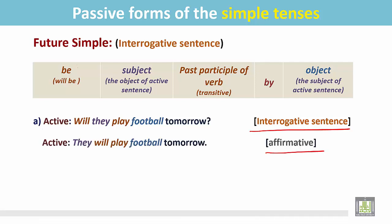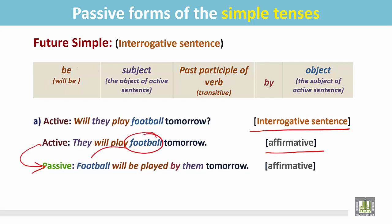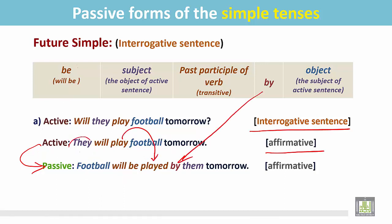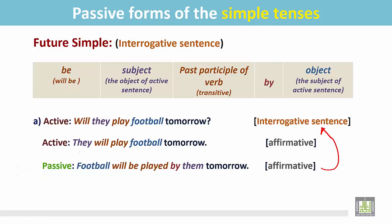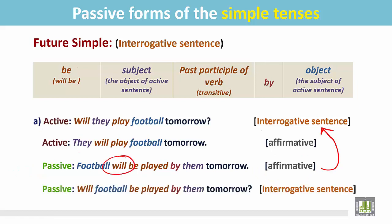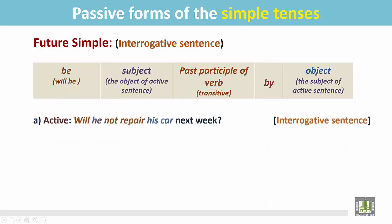First we make this interrogative sentence into an affirmative sentence: 'They will play football tomorrow.' It is now in affirmative form. We change this active sentence into passive: 'football' is the object and it becomes the subject; 'will be' is the be verb; 'played' is the past participle form of 'play'; 'by' is the preposition; and the subject of the active sentence becomes the object. Result: 'Football will be played by them tomorrow.' The sentence is still in affirmative form. We change this into interrogative by placing the be verb before the subject: 'Will football be played by them tomorrow?'